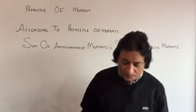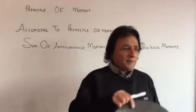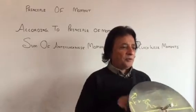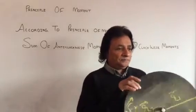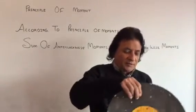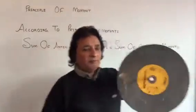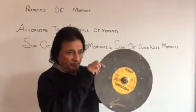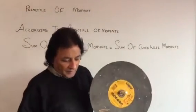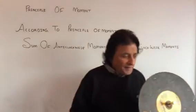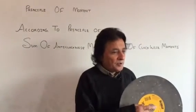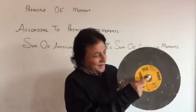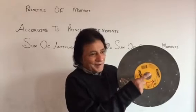Look students, it's a body which is capable of rotation. This is a body which is capable of rotation — see, it's rotating — and it is pivoted above this marker.